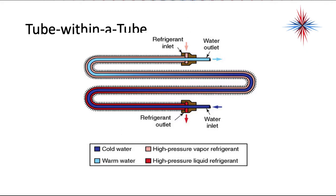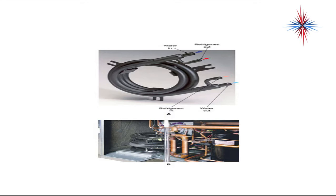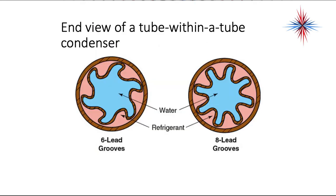In the tube-within-tube condenser, the water and refrigerant flow in opposite directions — a counter-flow arrangement. Cold water entering meets the lowest temperature refrigerant, while the highest refrigerant temperature is where warm water exits. These condensers are found in geothermal heat pumps, commercial ice machines, and hotel systems using large water loops. In cross-section, water runs on the inside and the refrigerant is on the outside.